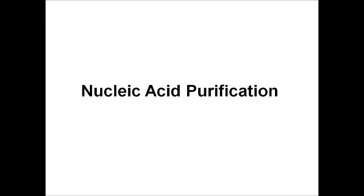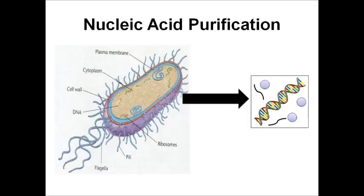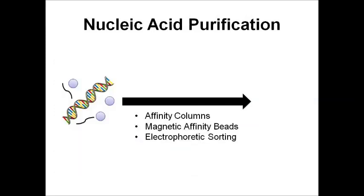Now that we've extracted DNA from the cells, we need to amplify the signal — but first we need a pure sample. The lysed sample contains not just DNA but also proteins and RNA. Methods to selectively isolate nucleic acids include affinity columns, magnetic affinity beads, and electrophoretic sorting. These methods harness the unique biochemistry of nucleic acids — particularly their charge — to selectively grab nucleic acids and leave other molecules such as proteins behind.